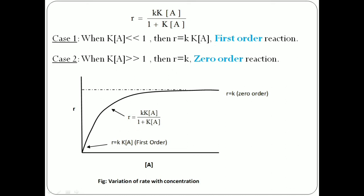In the rate versus concentration graph, you can see that the rate of the reaction increases at lower concentrations. At higher concentration, the graph becomes flat — that is, the surface becomes saturated.